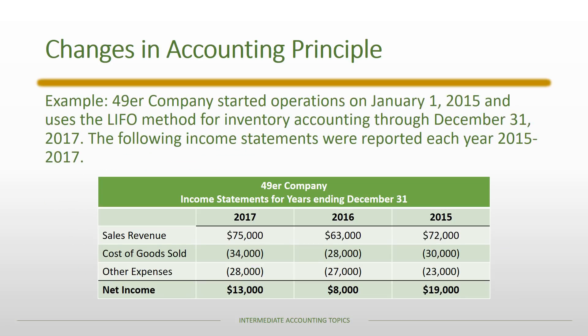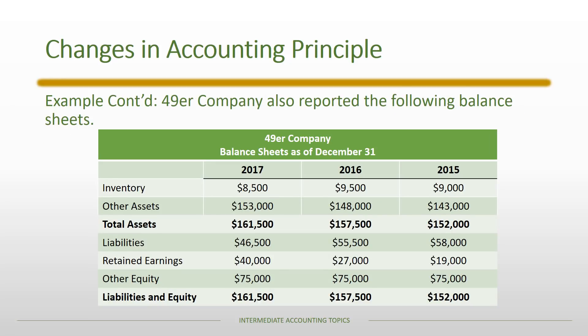Here is an example. 49er Company started operations on January 1st, 2015 and used the LIFO method for inventory accounting through 2017. The following income statements were reported each year from 2015 through 2017 — cost of goods sold is separated out since it deals with inventory, and all other expenses are lumped together. We also have the 2015, 2016, and 2017 balance sheets, with inventory separated from other assets and retained earnings separated from other equity accounts, so we can clearly see the effects of any inventory change.